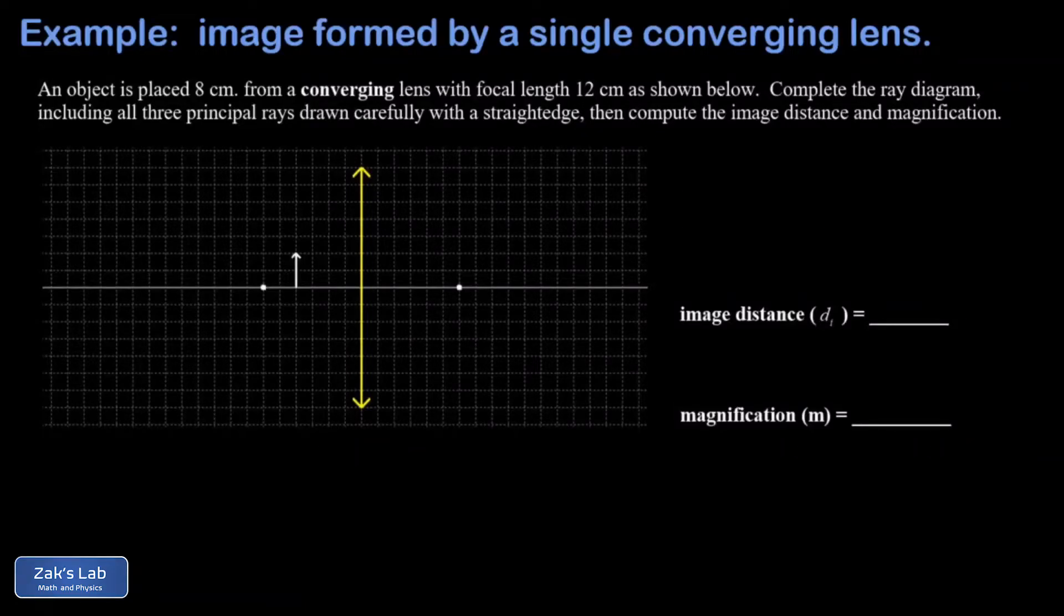In this problem, we're given a single converging lens, also called a convex lens. We can see the foci for that lens, and we're told that those are 12 centimeters from the lens itself.